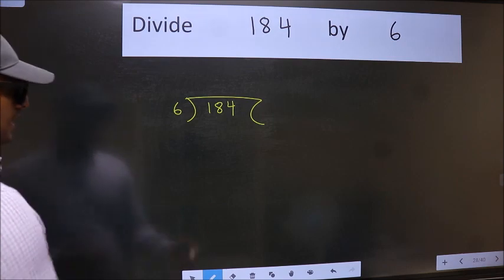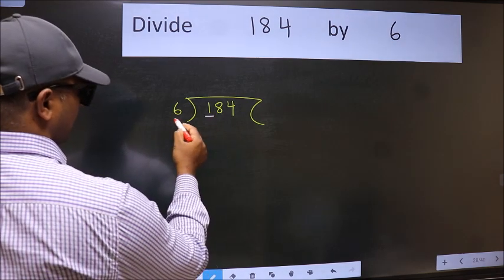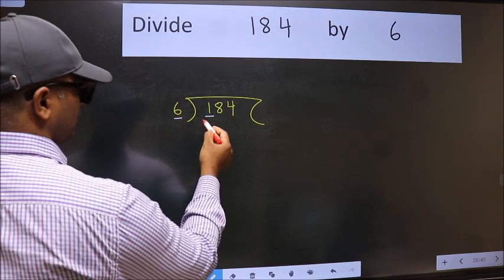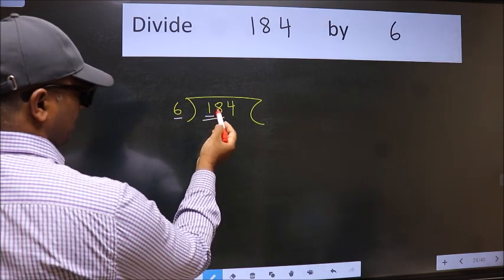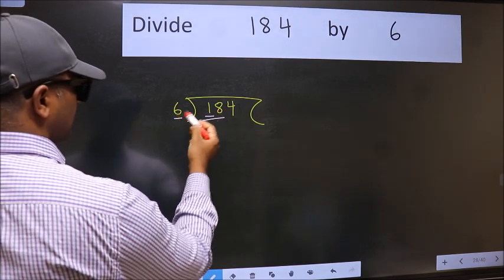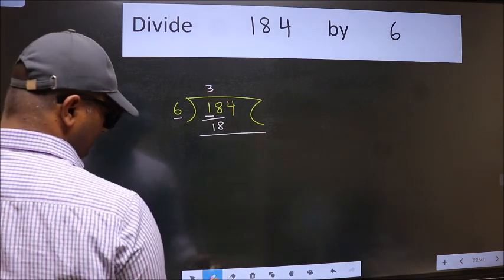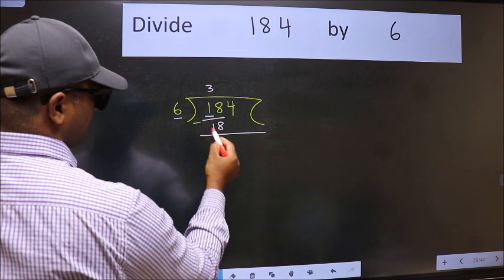Next, here we have 1 and here 6. 1 is smaller than 6, so take two numbers, 18. When do we get 18 in 6 table? 6×3 is 18. Now we should subtract. We get 0.